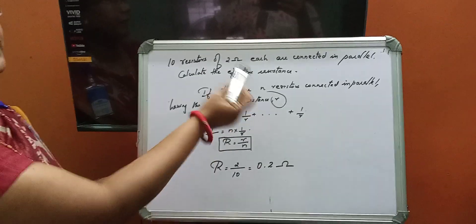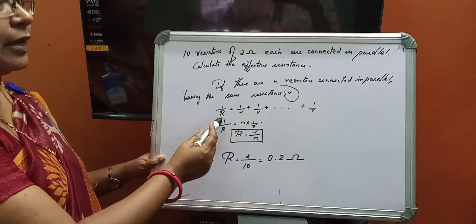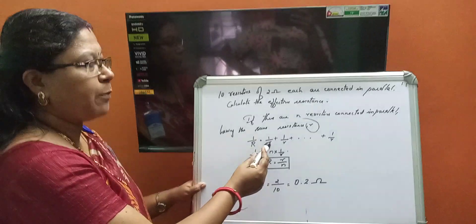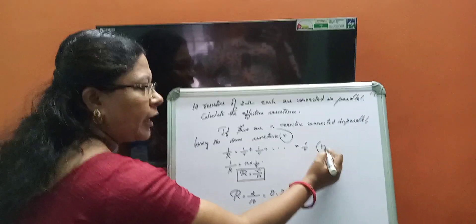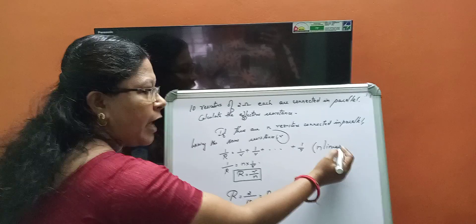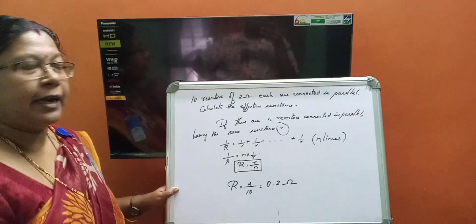1 by R is equal to, it is connected in parallel. So, 1 by R is equal to 1 by small r plus 1 by small r plus etc. How many r are there? n are there. So, it becomes n times.